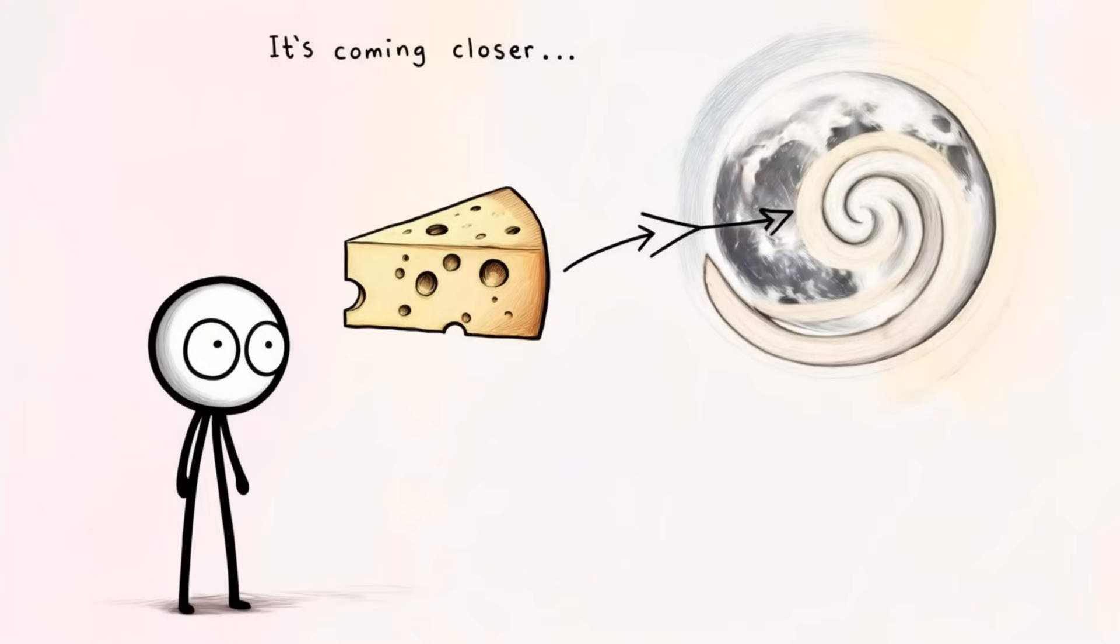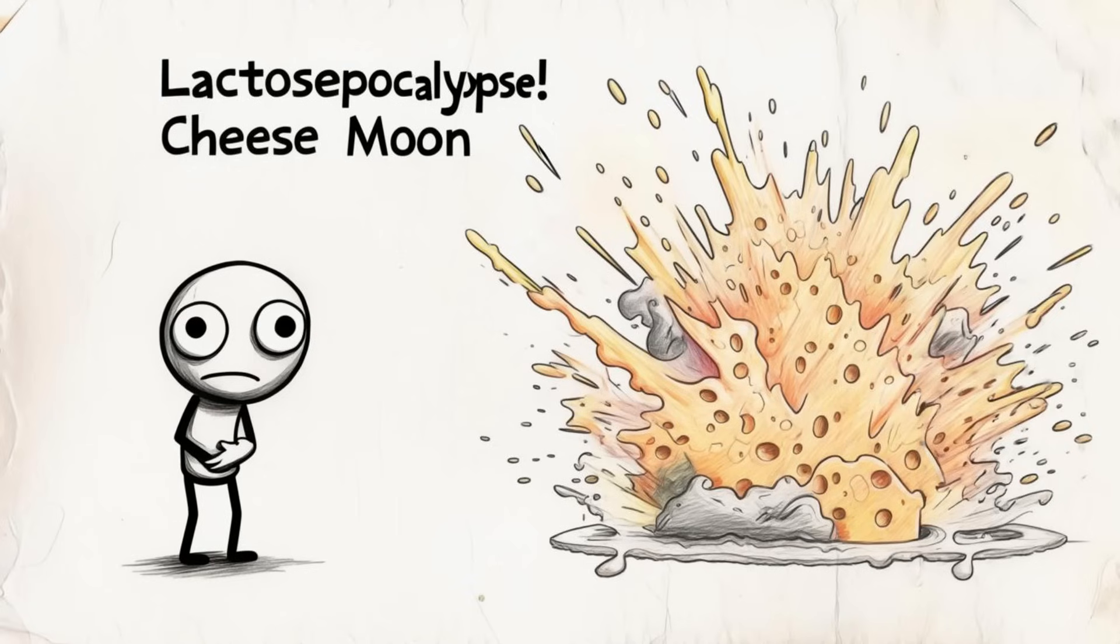But let's imagine it doesn't fall. Let's say the moon remains stable. Just cheesy. What about space weather? The moon gets bombarded by micrometeorites all the time. That's fine for solid rock. But for cheese, not so much. Every little impact would splatter, crumble, or melt part of it. Over the years, the moon would start looking like a war-torn cheese ball, full of gouges, cracks, and smelly craters.